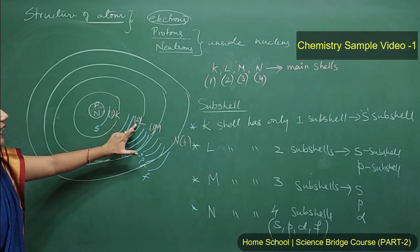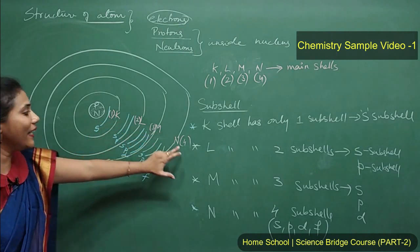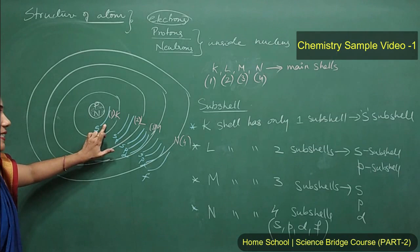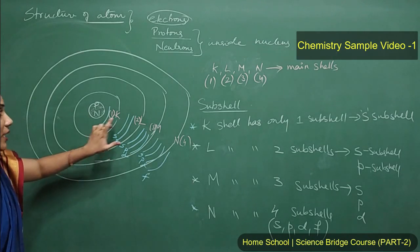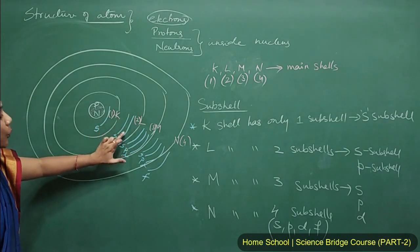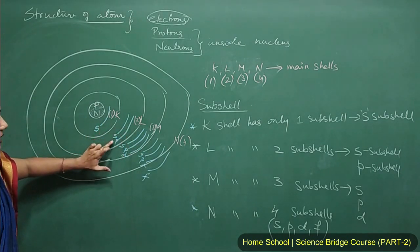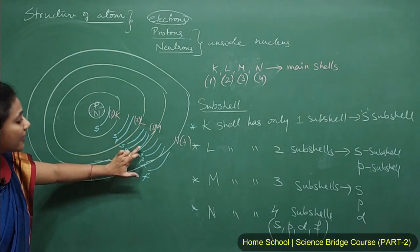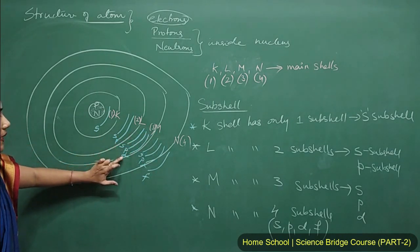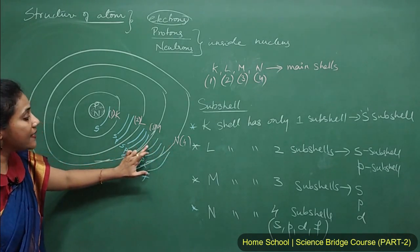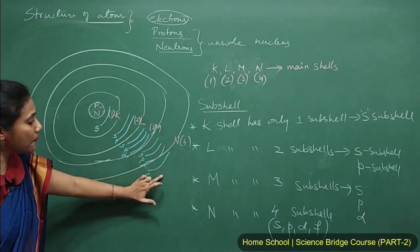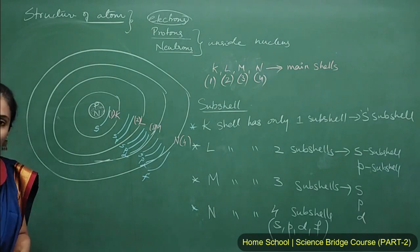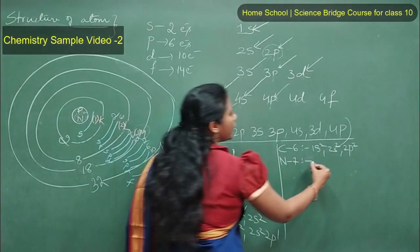The shells are K, L, M, and N. The K shell has only one sub-shell: the s sub-shell. The L shell has two sub-shells: s and p. The M shell has three sub-shells: s, p, and d. The N shell has four sub-shells: s, p, d, and f. This is the basis for understanding electronic configuration.